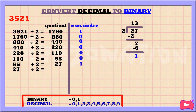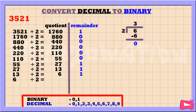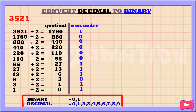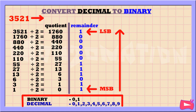27 divided by 2 is 13, remainder 1. 13 divided by 2 is 6, remainder 1. 6 divided by 2 is 3, remainder 0. 3 divided by 2 is 1, remainder 1. 1 divided by 2 is 0, remainder 1. Once we have a quotient of 0, we stop dividing. At the bottom we have the most significant bit (MSB) and at the top the least significant bit (LSB). Reading remainders from bottom to top, the binary equivalent of 3521 is 110111000001 base 2.